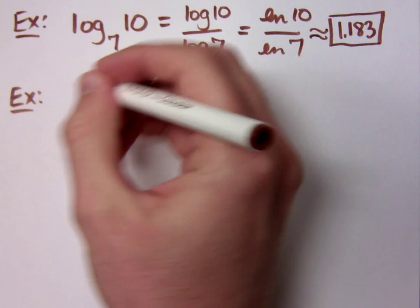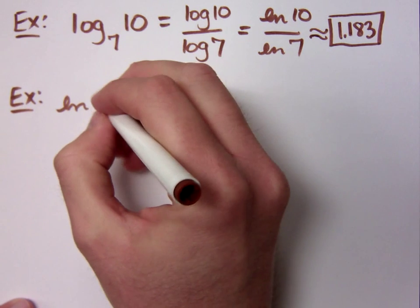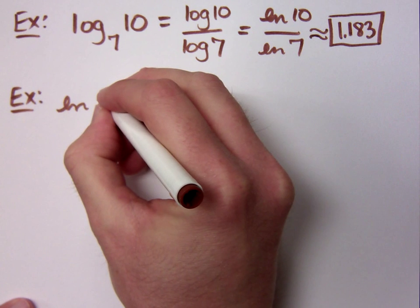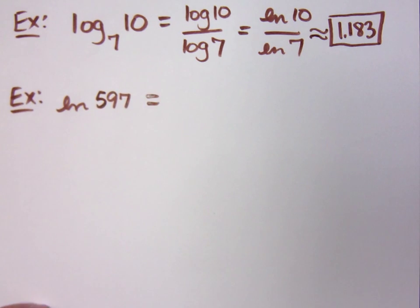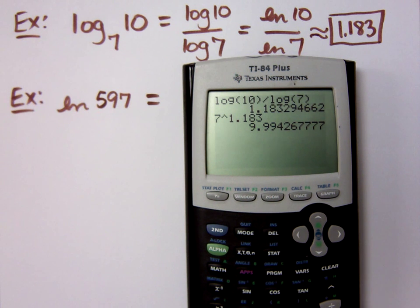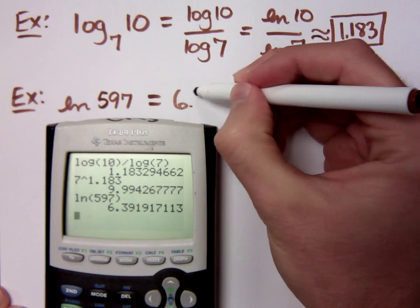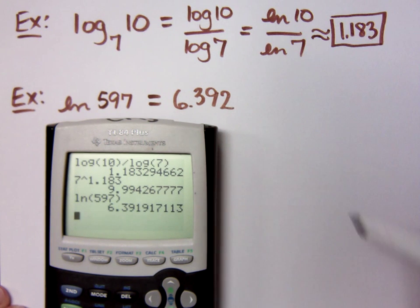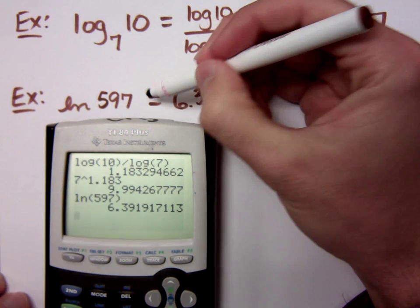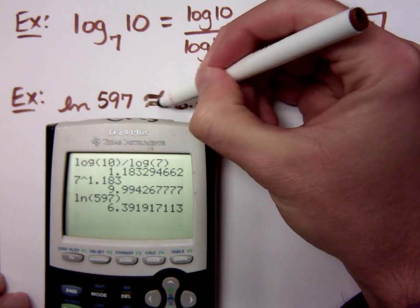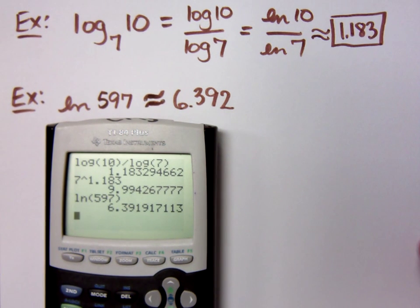Now, going back to something we saw on the review, if I just say what is the natural log of 597, I mean, natural log means you have a log with a base of what? E. Now, do you know E to what power gives you 597? Probably not. All you have to do here is type this in, natural log of 597, and you get this decimal. So this is about 6.392. Oh, you're right. Yes, approximately equal to.